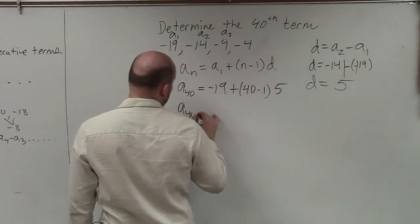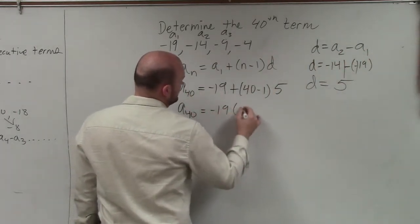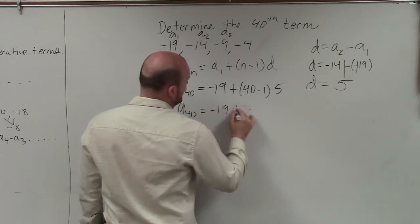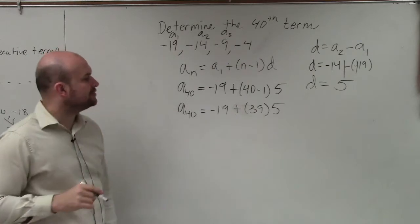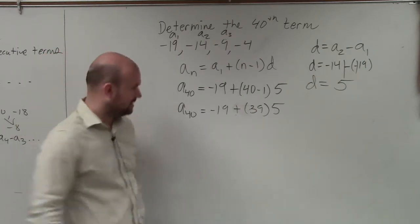So therefore, I have a to the 40th equals negative 19 plus 39 times 5. Then I need to do 39 times 5, which is 195.